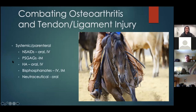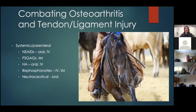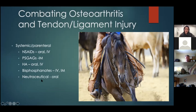Polysulfated glycosaminoglycans (PSGAGs) are usually given intramuscularly, though they can be used intra-articularly. Hyaluronic acids (HA) — Legend is the most common — come in oral and IV forms. Bisphosphonates like Osphos or Tildren work on bone turnover and osteoclasts involved in the normal bone remodeling cycle. Nutraceuticals are often oral, providing benefits through the diet rather than as a traditional drug or veterinary medication.